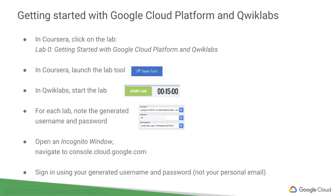As you work your way through these lessons in Coursera, you're going to start to see labs at the end. Each lab is clearly going to say 'lab' and then the title of the lab. In this case, we're looking at the very first lab, which is getting you started with QuickLabs — lab zero. So what you're going to do inside of Coursera is go ahead and click on that lab title, and in the lower right-hand corner, you're going to see a button that says 'Open Tool'.